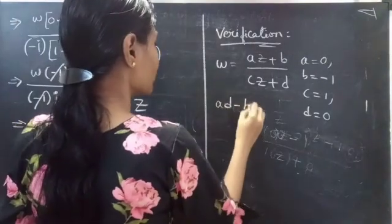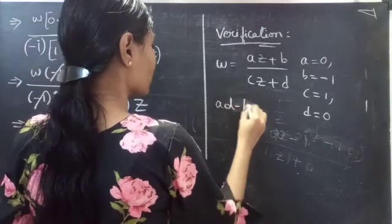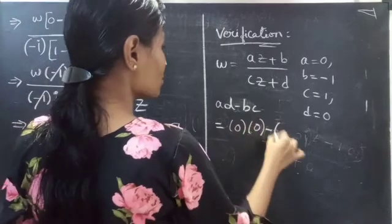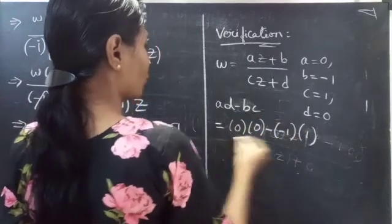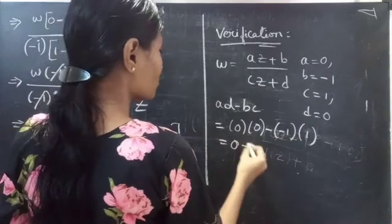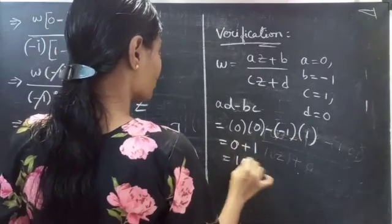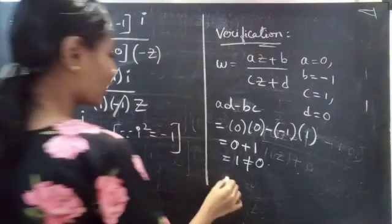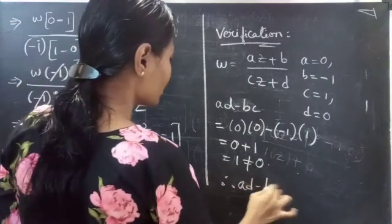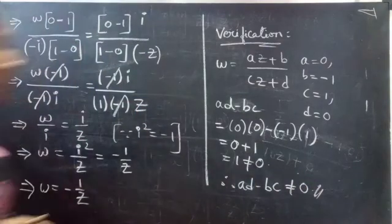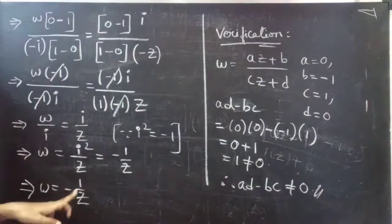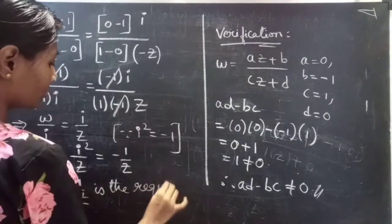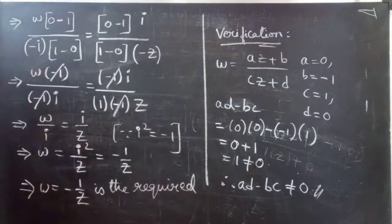Now take the condition ad − bc: a = 0, d = 0, b = −1, c = 1. So ad − bc = (0)(0) − (−1)(1) = 0 + 1 = 1, which is not equal to 0. Therefore ad − bc ≠ 0, and we can say that ω = −1/z is the required bilinear transformation.